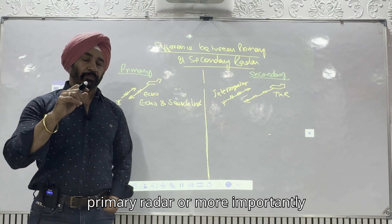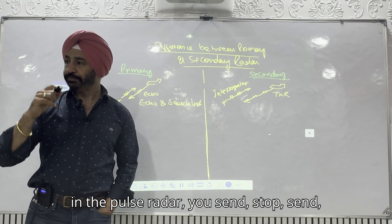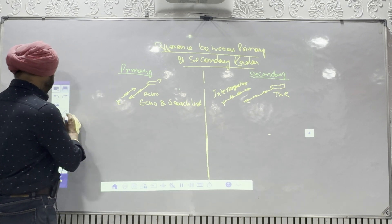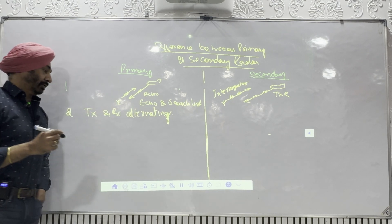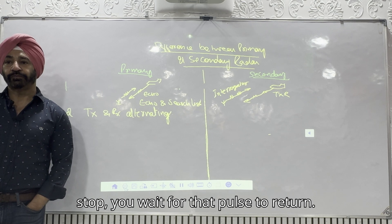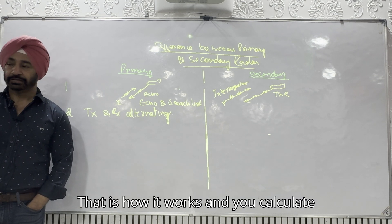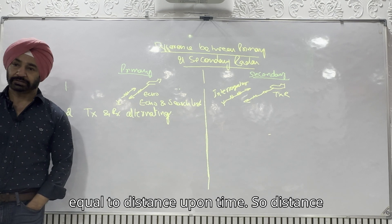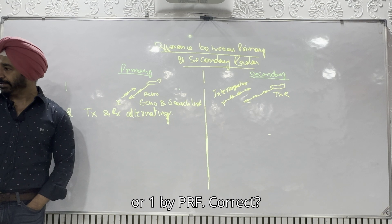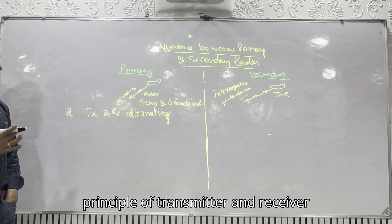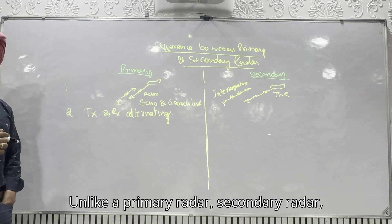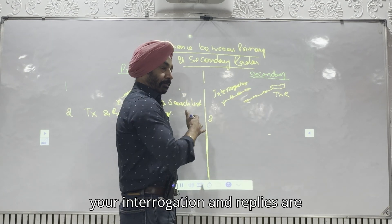In primary radar — more importantly in pulse radar — you send, stop, send, stop: transmit, receive, transmit, receive. Transmission and reception alternate. Your transmitter and receiver are switching on alternately. You send a pulse, stop, wait for that pulse to return, calculate how much time it has taken, and distance is c × t / 2, where T is PRI or 1/PRF. Unlike primary radar, in secondary radar your interrogation and replies are continuous — one end is continuously interrogating, the other end is continuously replying.